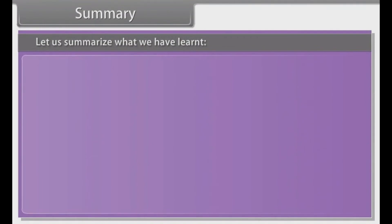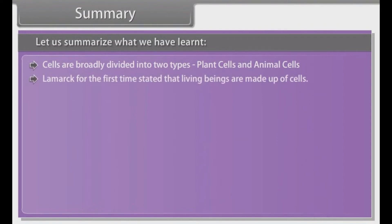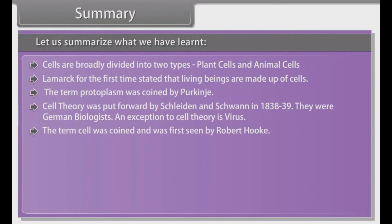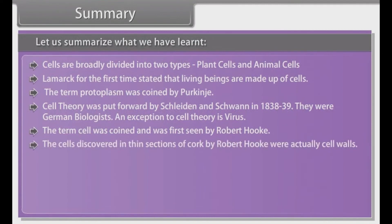Summary. Cells are broadly divided into two types: plant cells and animal cells. Lamarck was the first to state that living beings are made up of cells. The term protoplasm was coined by Purkinje. Cell theory was put forward by Schleiden and Schwan in 1838–1839. An exception to cell theory is the virus. The term cell was coined and first observed by Robert Hooke. The cells discovered in thin sections of cork by Robert Hooke were actually cell walls. Nucleus was discovered by Robert Brown.